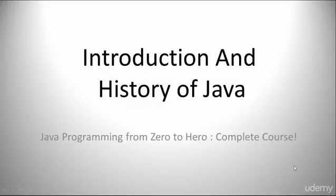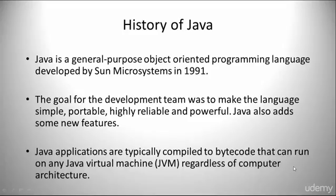Let's get started on the introduction and history of Java. Java is a general-purpose object-orientated programming language, and it was developed by Sun Microsystems in 1991. The goal for the development team was to make the language simple, portable, highly reliable, and powerful.